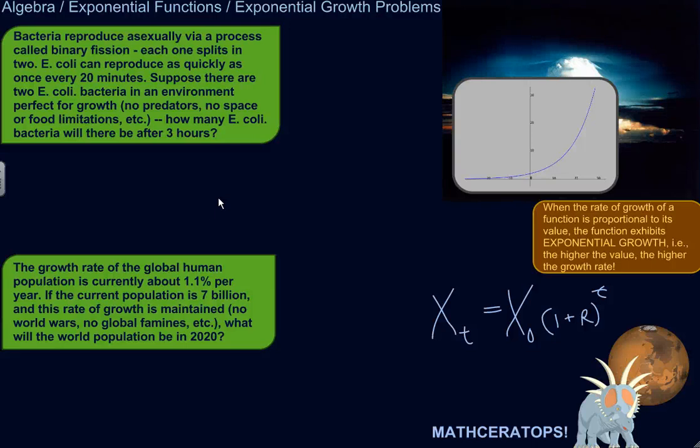All right, let's do a couple of real-world exponential growth problems. So exponential growth occurs when the value of the function, the higher the value of the function, the higher the growth rate of the function, the more quickly it grows. And the basic structure of the relationship is like this. There's different ways of writing this equation.